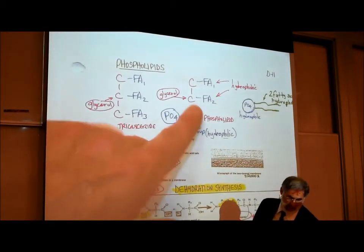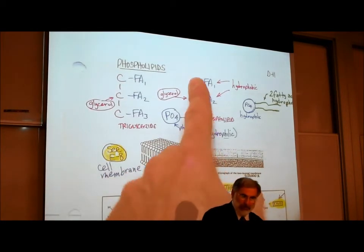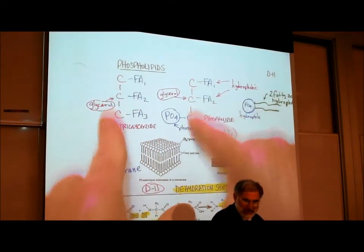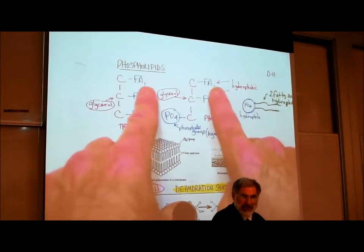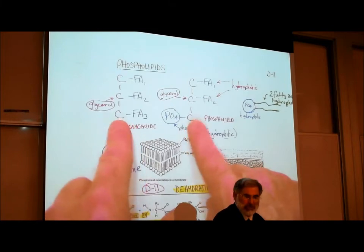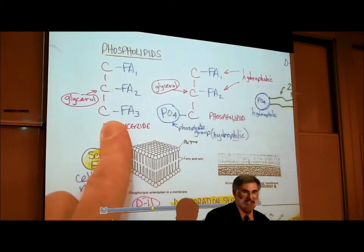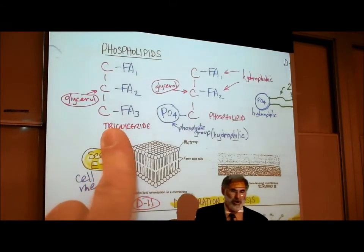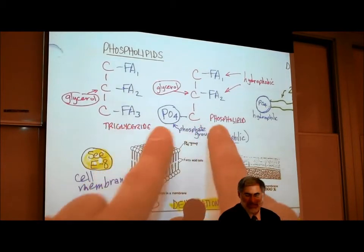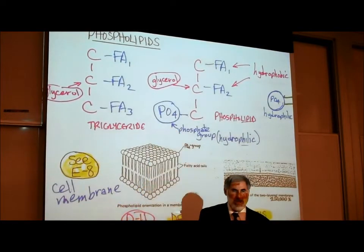Drawn right next to it is a phospholipid. A phospholipid also has a three-carbon glycerol molecule, just like the triglyceride, and just like the triglyceride, it has one and two fatty acids attached. The real difference between a phospholipid and a triglyceride is what's attached to the third carbon. In the case of a triglyceride it's a third fatty acid; in the case of a phospholipid, it's a phosphorus and four oxygens, known as a phosphate group.